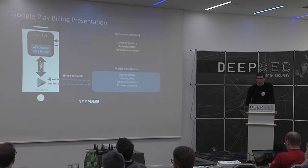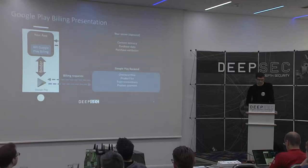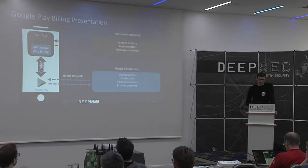After the payment is correctly performed, a receipt is sent to your application telling it the purchase was correctly completed along with the purchase details. Normally — though this is optional — the developer can perform extra steps to verify this receipt given by Google, and then deliver the content to the user.